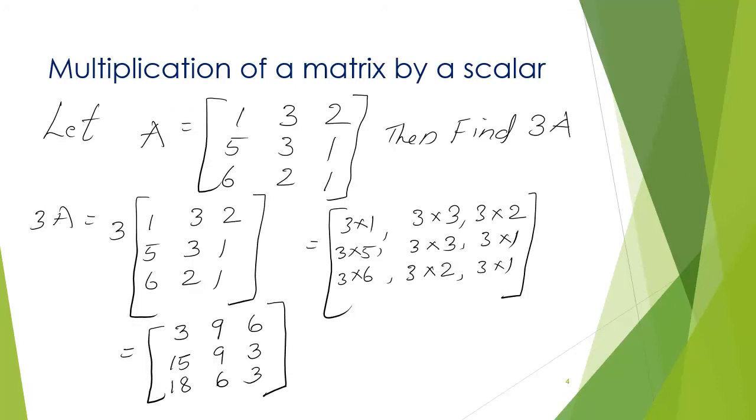Next, multiplication of a matrix by a scalar. Let matrix A equal to 1, 3, 2, 5, 3, 1, 6, 2, 1. Find 3A. So, in order to find 3A, we have to multiply every element of the matrix A by 3.